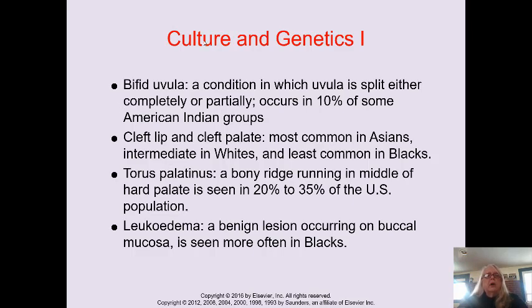There are cultural and genetic predispositions in the mouth, nose and throat. The little thing that hangs down in the back of your throat is called a uvula, and sometimes it is bifurcated — so it looks like you have two uvulas or there's a split, which looks a bit unusual. A bifurcated uvula occurs in about 10% of American Indian groups. Cleft lip and cleft palate are most common in Asians, moderately common in whites, and least common in Blacks.